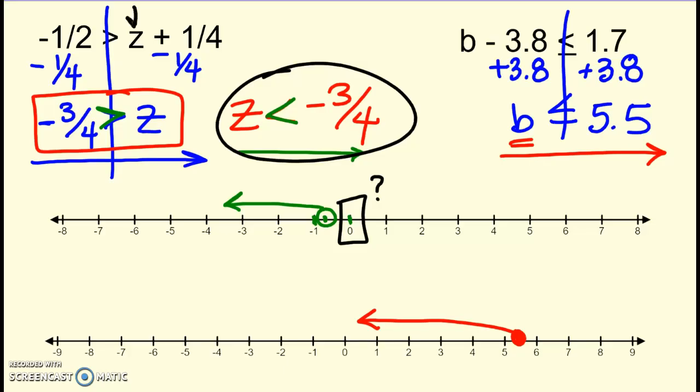So zero, if I plug zero back in here in my original, so come back up here to the original problem. Zero plus one fourth. Oh, well, that would give me one fourth. And I'm going to see if negative one half is greater than one fourth. No, it's not. That doesn't work. So since zero doesn't work, you know the arrow isn't this way. It must go the other way.